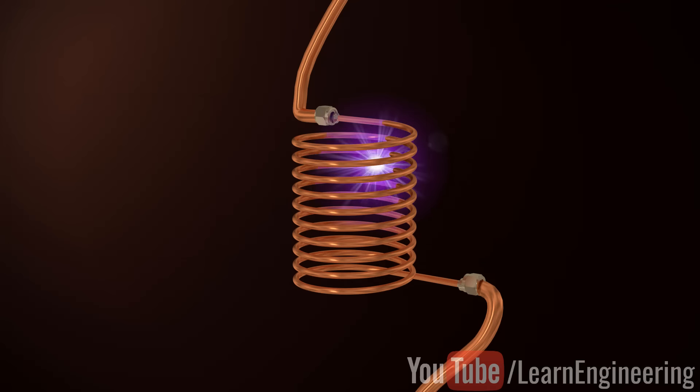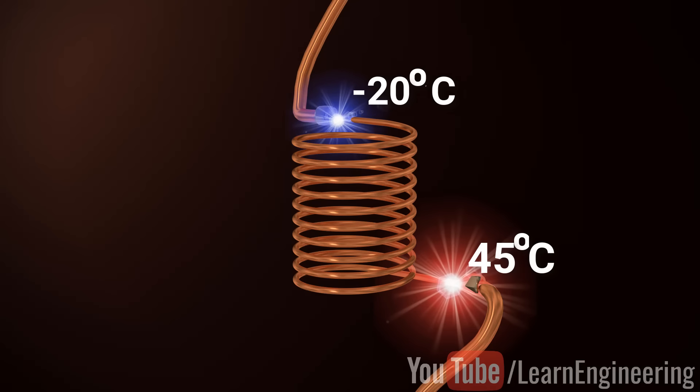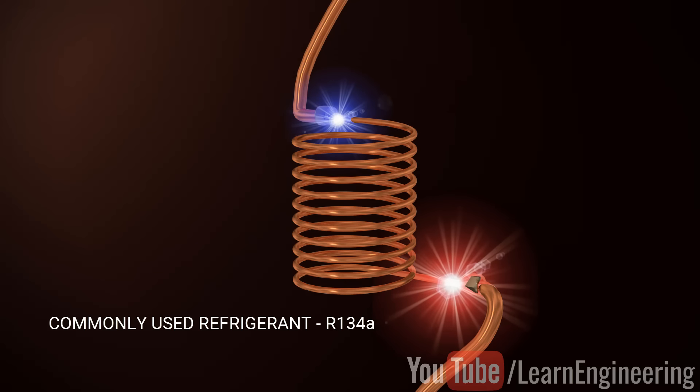If you check the temperature across the throttling device, you will notice this drop. Please note that only a portion of the refrigerant is evaporated here. This is one important property of the refrigeration fluid. It should be able to change the phase while varying the pressure under normal temperatures.